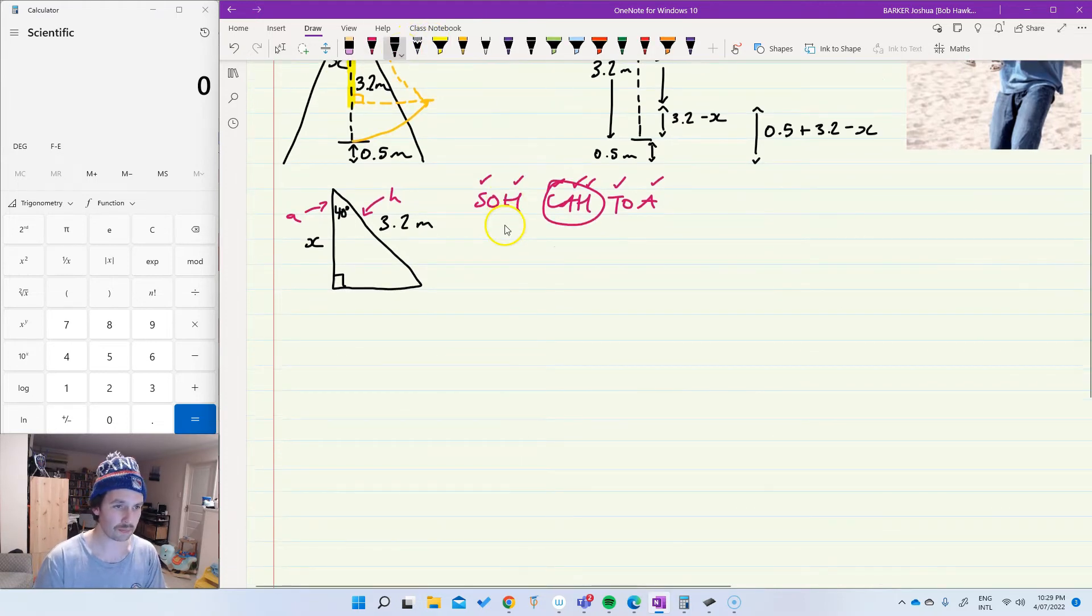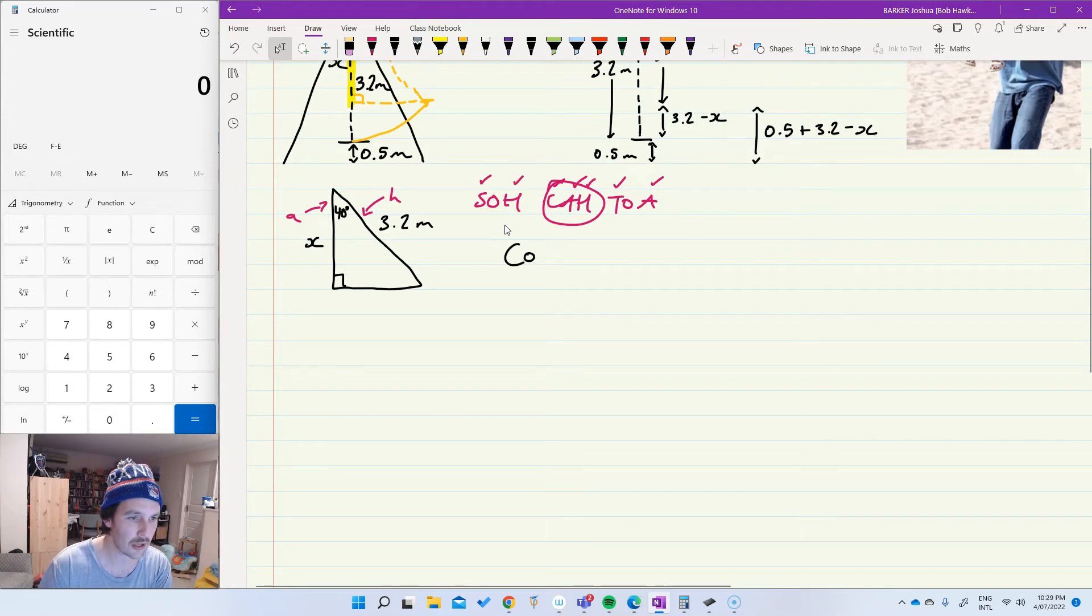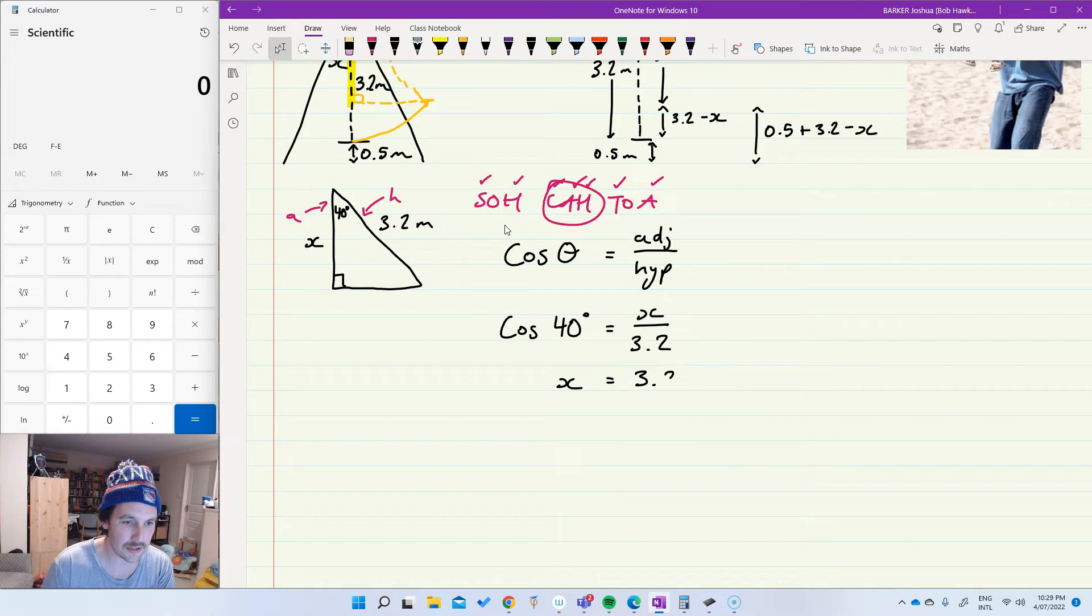Okay. Now that's step one. Step two is going to be to write my ratio down. So cosine of the angle is going to be equal to the ratio between the adjacent and the hypotenuse. Now I'll substitute. So cosine of 40 degrees is going to be equal to X over 3.2. Now I'll do a little bit of rearranging. X is going to be equal to 3.2 multiplied by the value of cos 40.